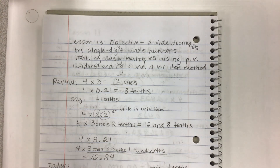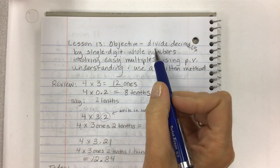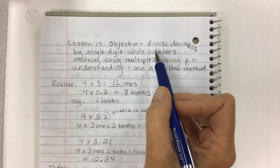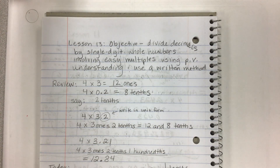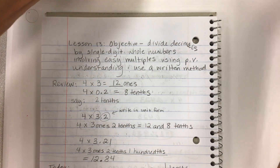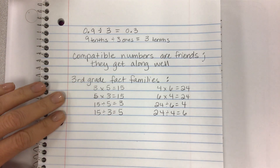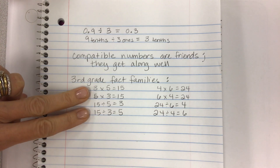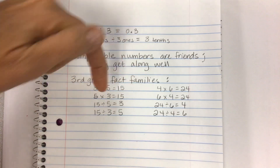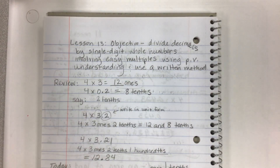We're going to do Lesson 13 — Eureka Math Lesson 13, fifth grade. The objective is to divide decimals by single-digit whole numbers involving easy multiples using place value understanding and a written method. We were talking about what 'easy multiples' means, and it's all about those fact families. In third grade you had to memorize these, and if you know your times tables you know all your fact families — you're just reversing the numbers from multiplication to division.